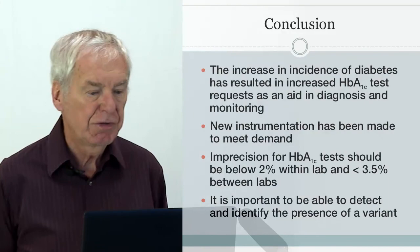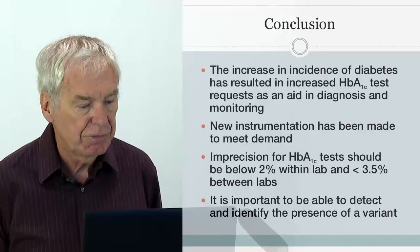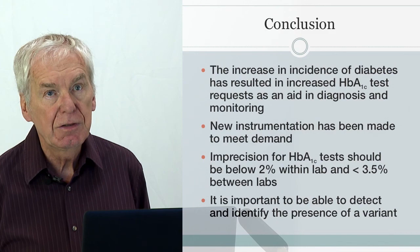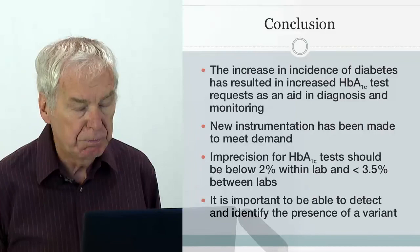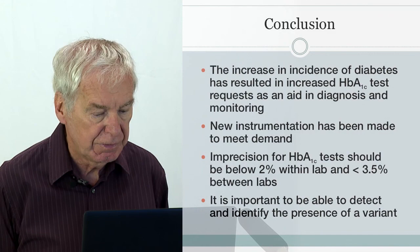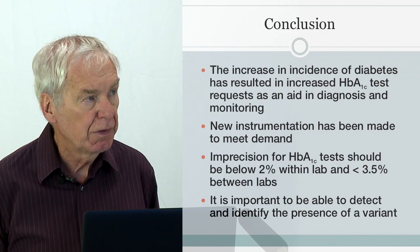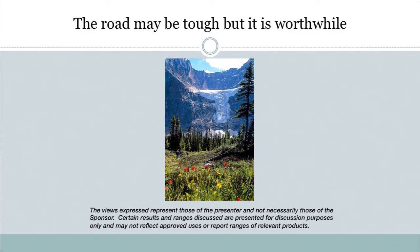In conclusion: the increase in the incidence of diabetes has resulted in increased A1c testing as an aid in diagnosis and monitoring. Newer instrumentation has been built to meet this demand. Within the laboratory we need imprecision below 2%, and between methods below 3.5%. It is also important to detect and identify the presence of a variant. Hemoglobin A1c analysis is not like glucose analysis — there are many facets one needs to understand to get an analytically and clinically useful result to the physician.